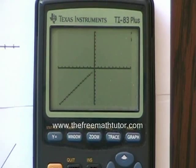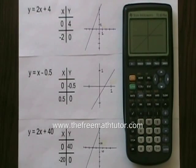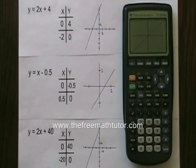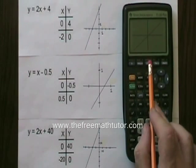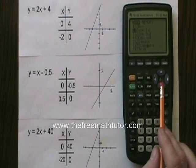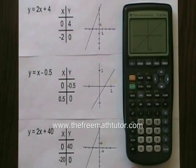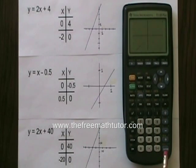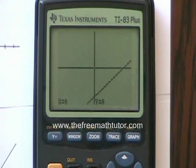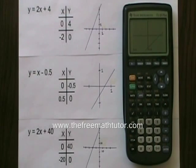I can see my line, but as I pointed out when we first looked at this equation, this line passes very close to the origin, and it's hard for me to see my x and y intercepts distinctly. So I'm going to use the zoom feature in order to see them better. Here is the zoom button. I press it, and I want to zoom in, so I'm going down to number 2, zoom in. I hit enter to choose that, and then I hit enter again, and if I want, one more time. Now I can see my graph quite well. I can see my x and y intercepts quite clearly.